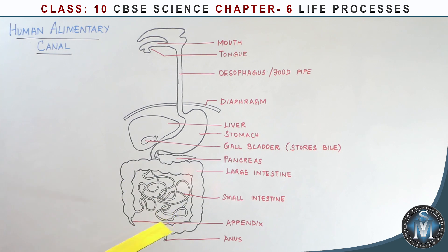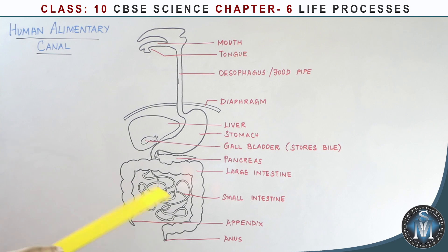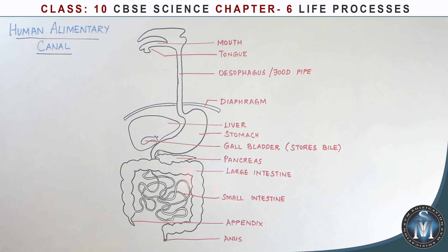The small intestine is the longest part of the alimentary canal. In herbivores (plant-eating animals), it is longer because plant material is harder to digest. In carnivores (flesh-eating animals), it is shorter because flesh is more easily digested. The small intestine has finger-like projections that aid absorption of digested food.